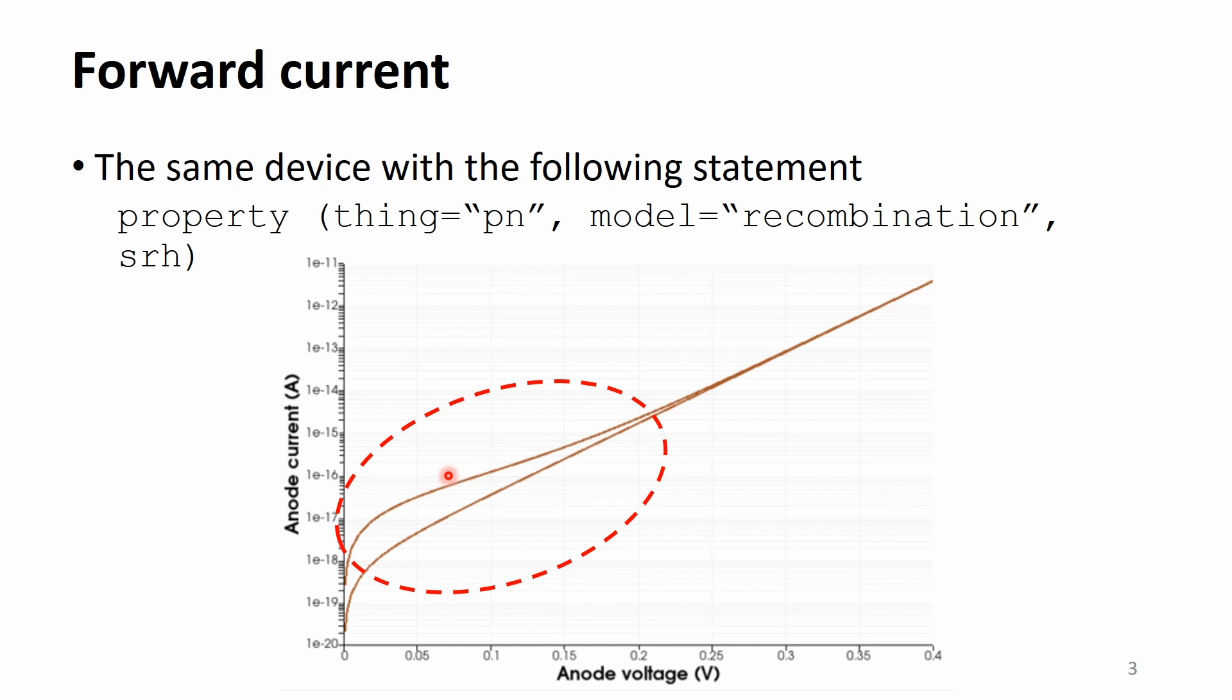Note that it has a different slope in the semi-logarithmic graph. The current related with the recombination center has a weaker dependence on the applied voltage.